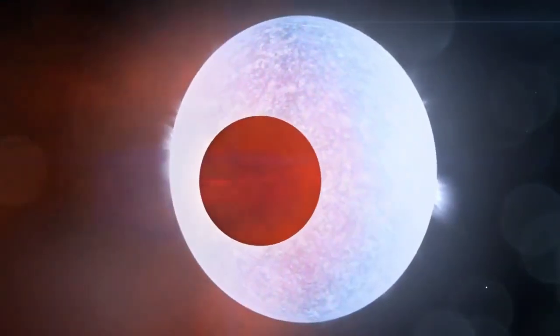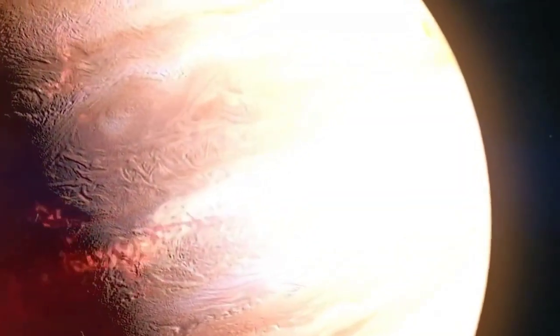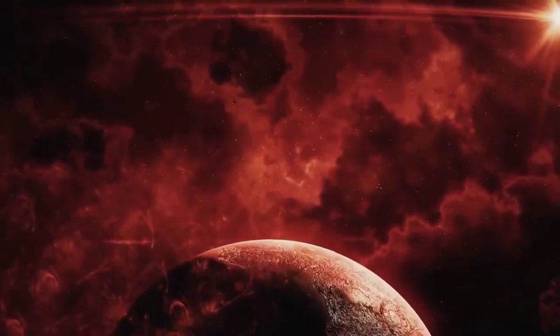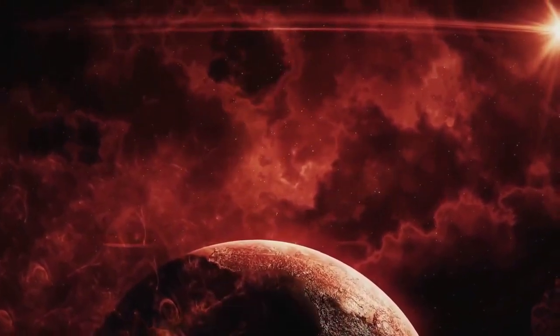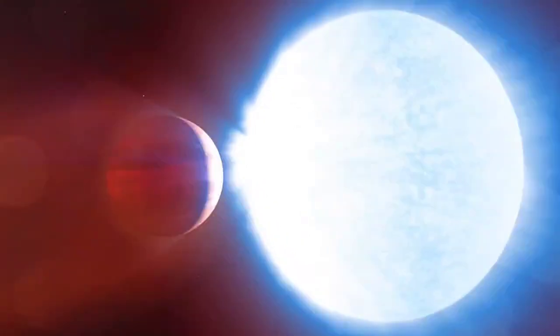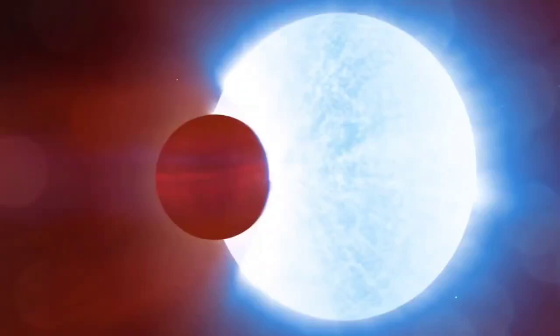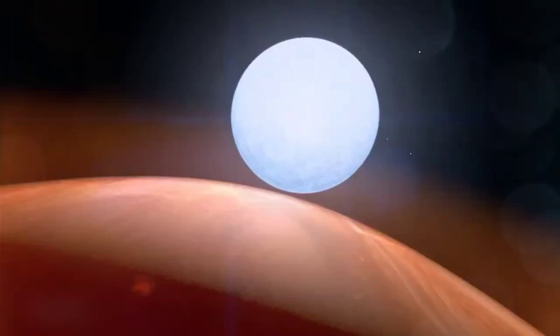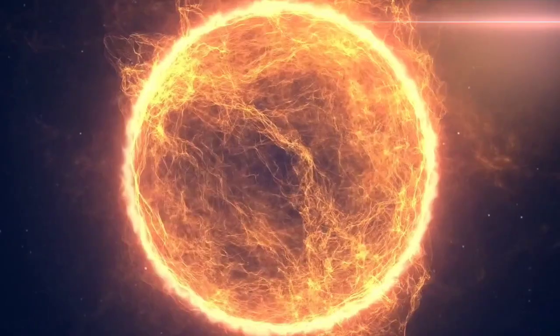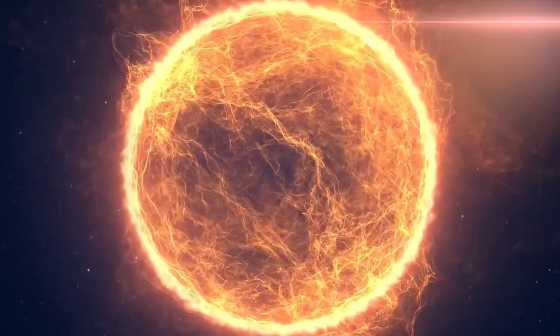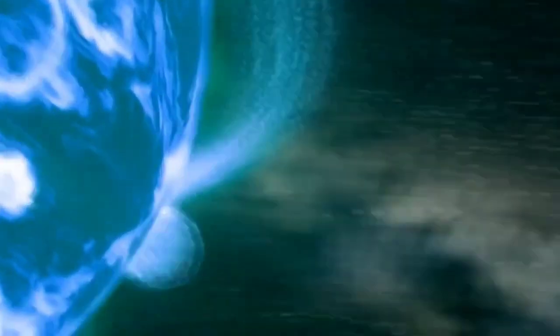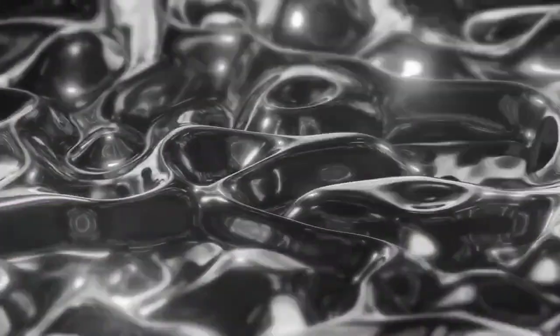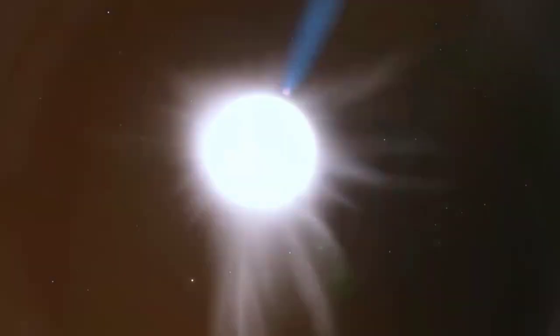The extreme conditions on KELT-9b classify it as a unique exoplanet. Its temperature is roughly 4,500 Kelvin, making it one of the hottest exoplanets known to man. The planet is so close to its star that it is tidally locked, which means that one side of KELT-9b is always facing the host star, and the other side is always facing away. The scorching temperatures on the day side of KELT-9b are enough to vaporize metals in the planet's atmosphere, including iron and titanium.